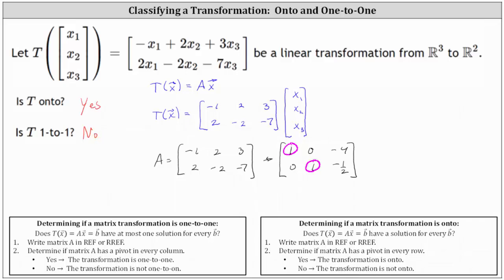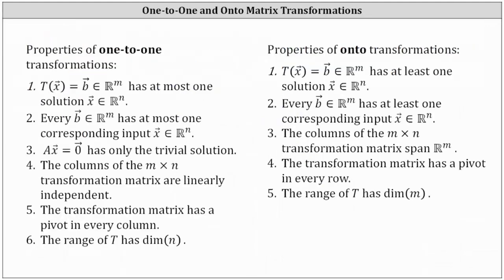Because we know the second transformation is onto, we know it has the properties shown here for onto transformations. I hope you found this helpful.